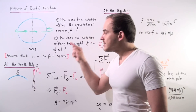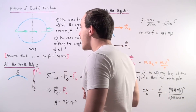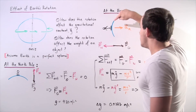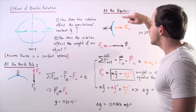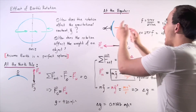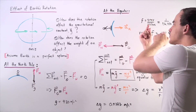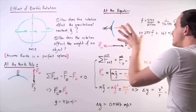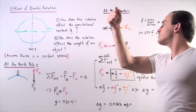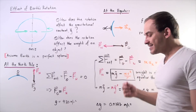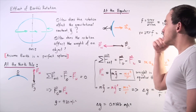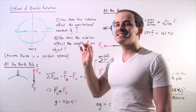Now what if we take the same person and the same scale and place them on the equator? Here's our person standing on a scale at the equator. Notice that the Earth is in fact rotating, and because the Earth is rotating at the equator, the person on the scale is also rotating. The velocity at this exact point points out of the board, and the object is accelerating radially toward the center of the Earth. So now we have an object that is in fact accelerating.